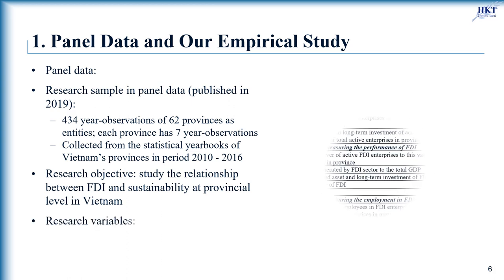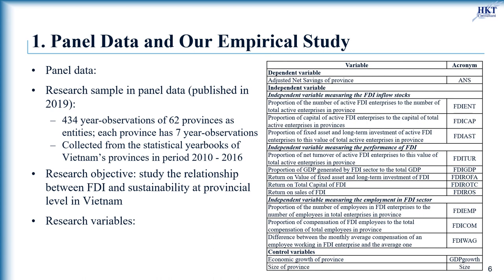Here are the variables of our research. The dependent variable is the adjusted net savings, which assesses the sustainable development of Vietnam provinces. In total, we have 11 independent variables distinguished in three groups: three variables associated with FDI inflow stocks, five variables associated with employment in the FDI sector, and three variables associated with the performance of FDI in provinces. Two control variables are size and economic growth of province.